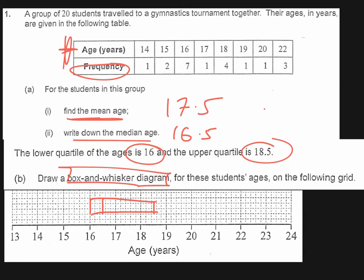The whiskers then are going to be the values that take us up to the maximum and minimum values. So the maximum value from the table, we can see, is 22 years. That is going to go all the way up here. And the minimum value is 14, which is going to go down here.